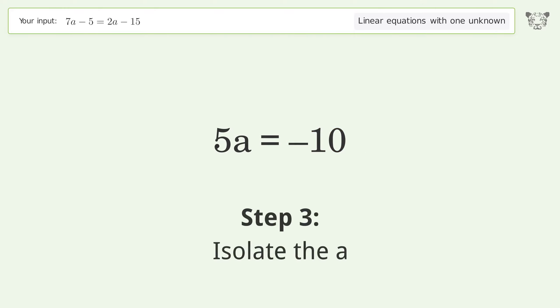Isolate the A. Divide both sides by 5. Simplify the fraction.